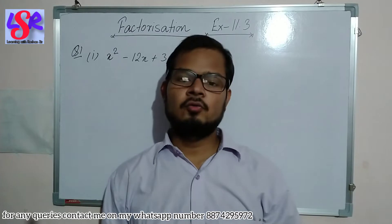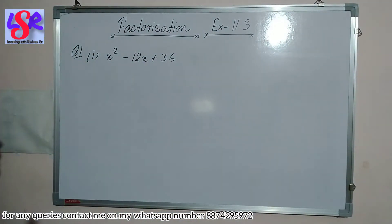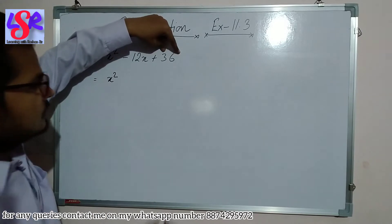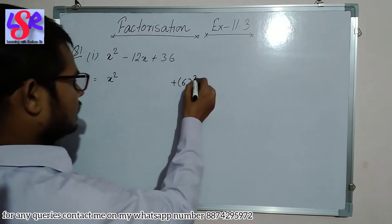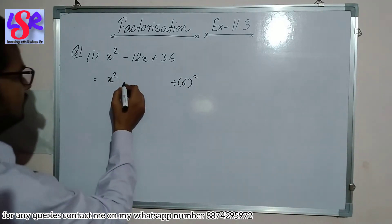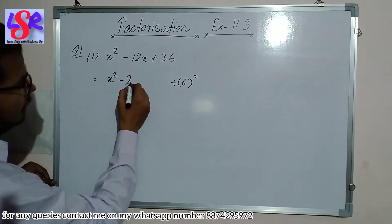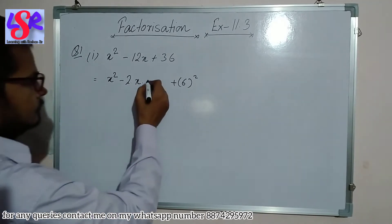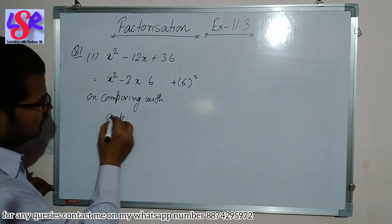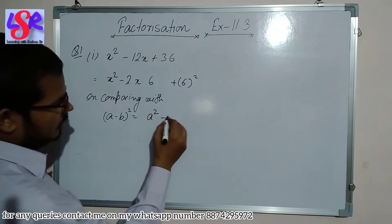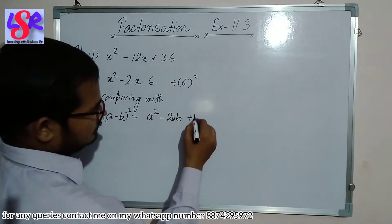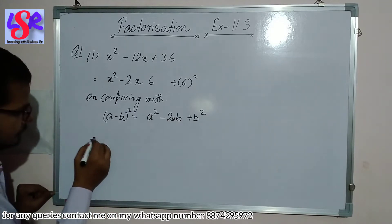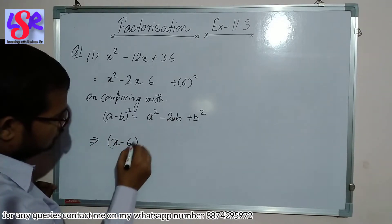Now let's start with question number one. We have to factorize this expression. First we see that x² is a square of x, and the last term is the square of 6. We convert the middle term in the form of 2ab: minus 2 into x into 6. Comparing with (a-b)² = a²-2ab+b², with a=x and b=6, we get (x-6)² as the answer.